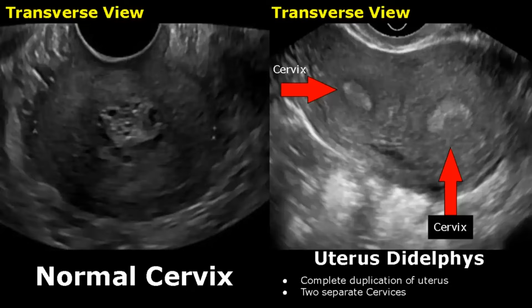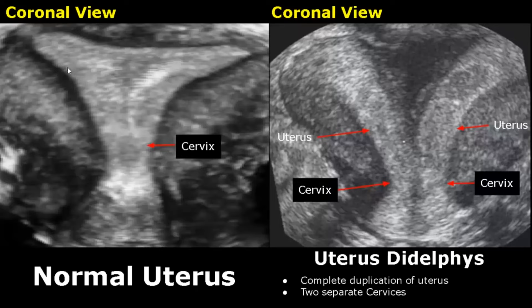These are 3D reconstructed coronal images of the uterus — this view is best for diagnosing congenital uterine malformations. This is how a normal uterus looks in a coronal 3D ultrasound image, and here we have two separate uteri showing complete duplication of the uterus and cervix.